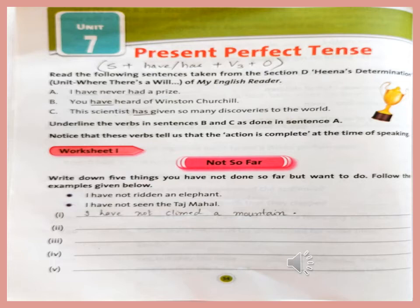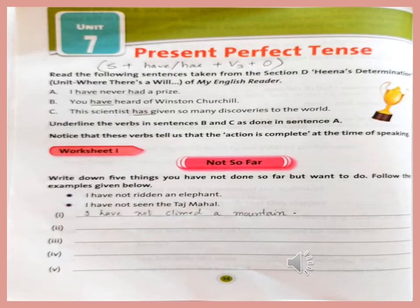Now let us do worksheet number 1 — 'Not So Far.' Write down 5 things you have not done so far but want to do. Follow the examples given below. One more example is done for your ease. First: I have not ridden an elephant. I have not seen the Taj Mahal. I have not climbed a mountain. In the same way, students complete the remaining blanks.